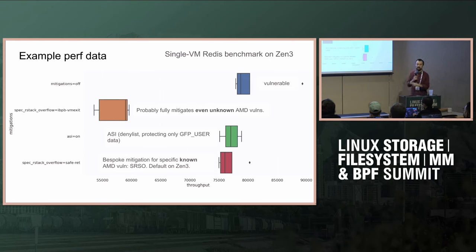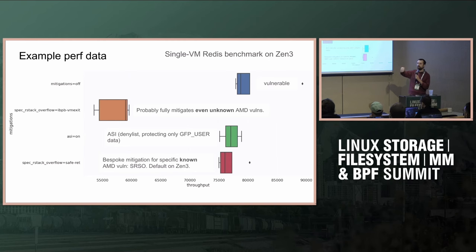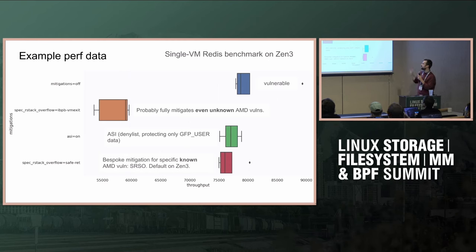Here's some performance data on the Redis benchmark. At the top is performance with mitigations switched off. On the left is a mitigation that exists in the kernel — probably nobody ever uses on any platform — which is a bit like ASI in that it probably mitigates even unknown bugs on AMD, but it's devastating: about a 30% degradation. At the bottom is SafeRet, the mitigation for SRSO from last year, which is a single-digit percentage degradation. For this workload, ASI is in that same ballpark — but as powerful as the blanket mitigation. To caveat: this version of ASI only protects GFP user data, so there are still attacks possible. Not a fully fair comparison, but strategically a good overview of where ASI is supposed to fit in.